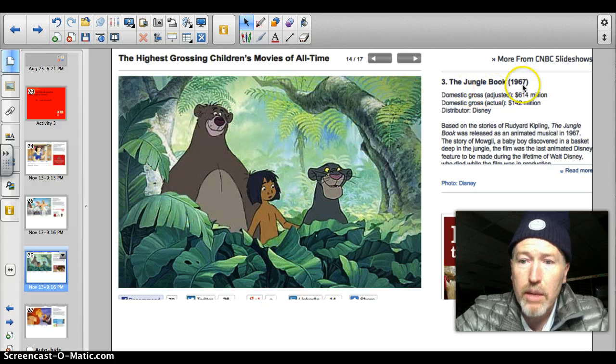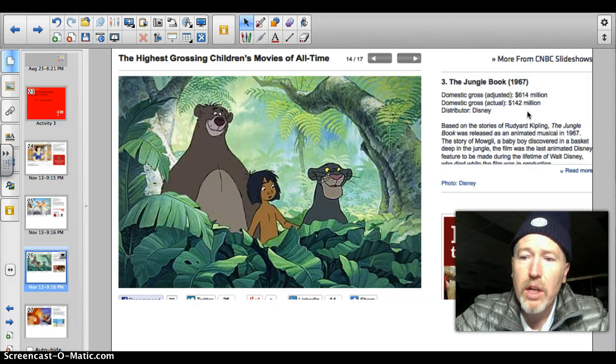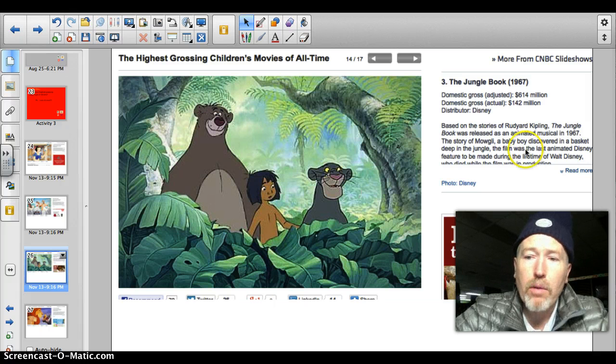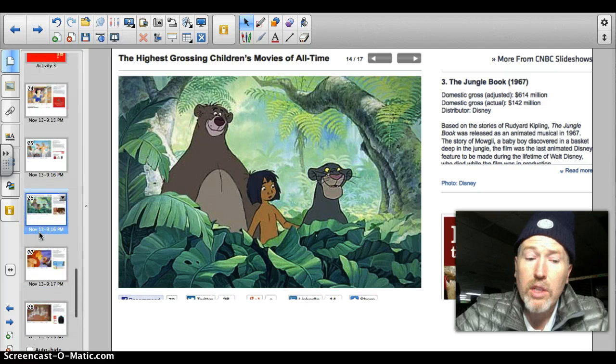The Jungle Book, number three, 1967. 1967, that brought in $142 million. Adjusted gross would be $614 million. So, basically, the three highest grossing movies of all time were put out almost before I was born. I was actually born at 64, so I was three when this came out, but a long time ago.